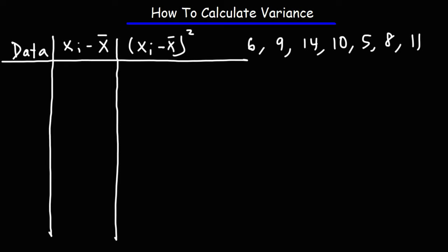So let's list the data in ascending order. First it's 5, and then 6, 8, 9, 10, 11, and 14.